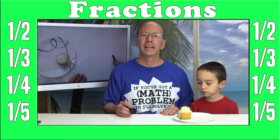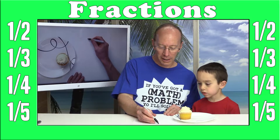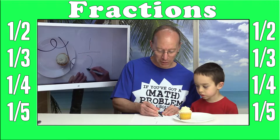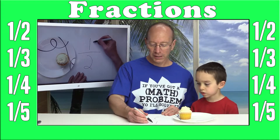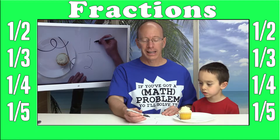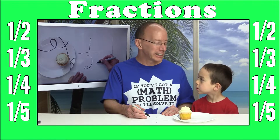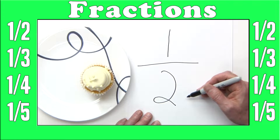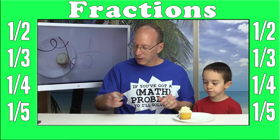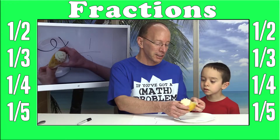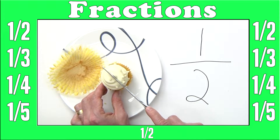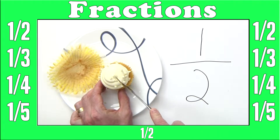And Lucas was right — a half. A half looks like this. You have a one here with a line that goes across and then another number down below. This number is called the numerator. This number is called the denominator. The top number tells how many parts are colored, or eaten in this case, and the bottom number tells how many equal parts there are in all. So let's go ahead and divide this cupcake.